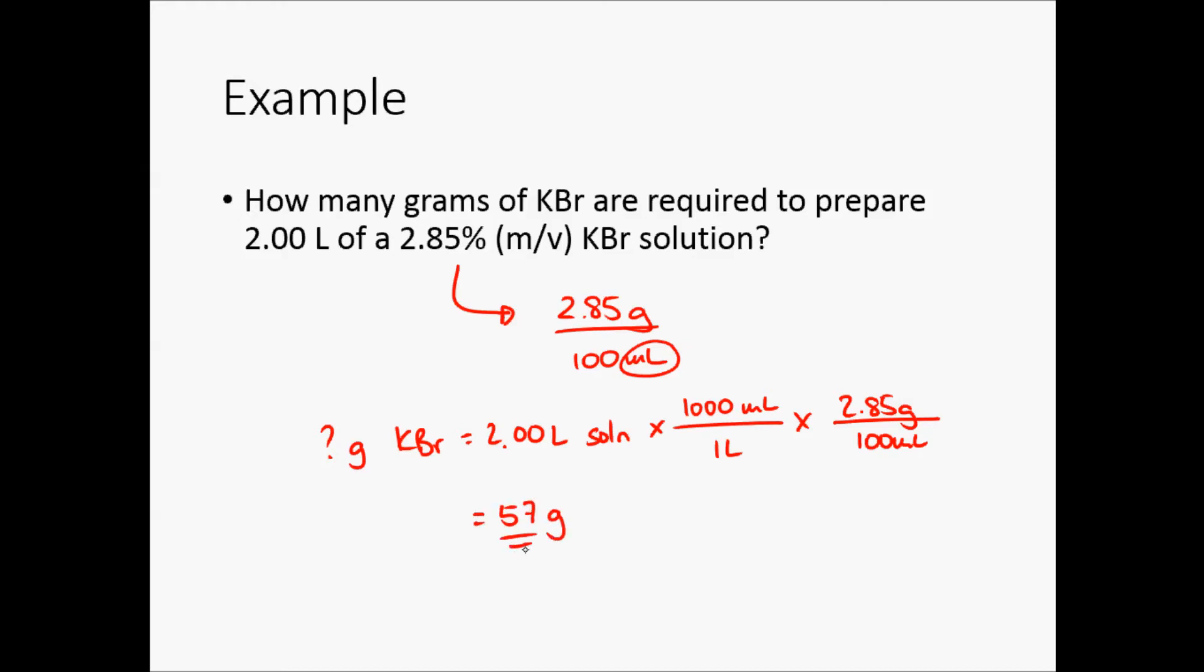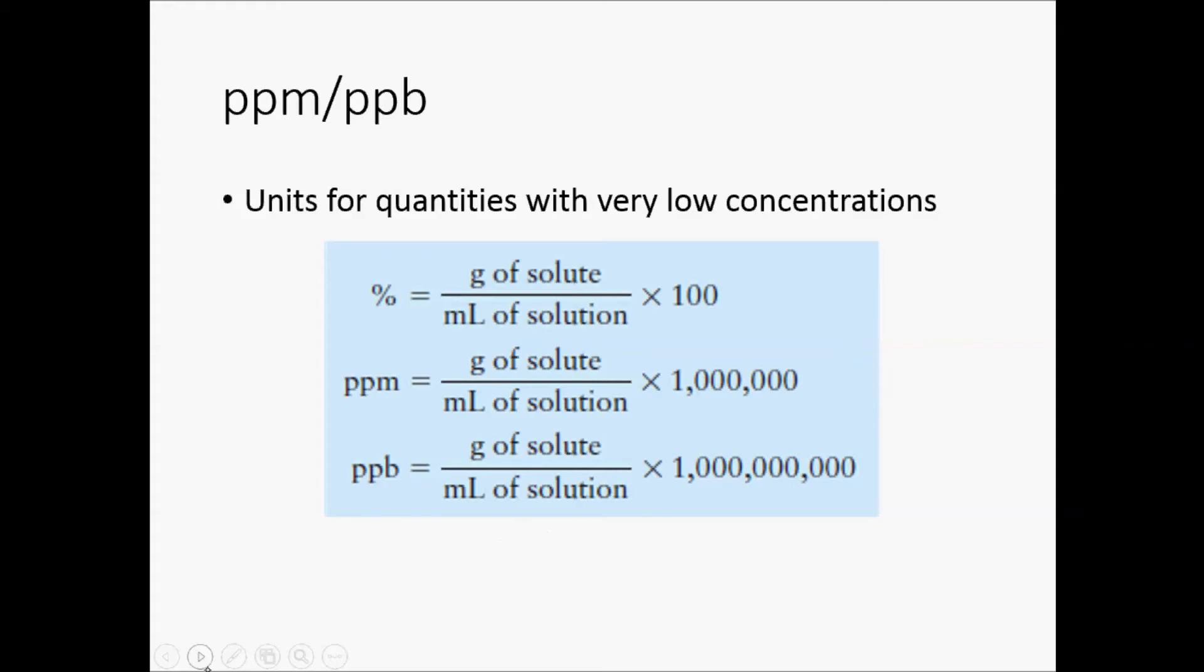Now, for very low concentrations, such as environmental toxins and things like that, we actually end up with units like parts per million or parts per billion. And what we're doing is, we again have grams over milliliters, but we now multiply by million or billion as appropriate.